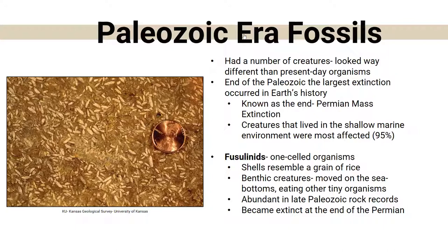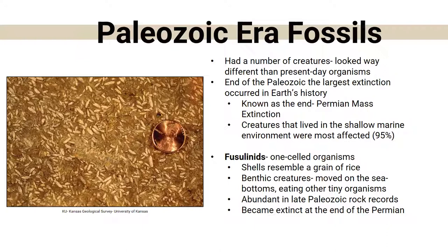There were tiny one-celled organisms that resembled a grain of rice. They were benthic creatures — at the very bottom of the ocean — moving around and eating other smaller organisms. These became extinct at the end of the Permian because of that mass extinction.